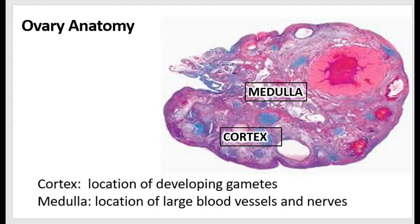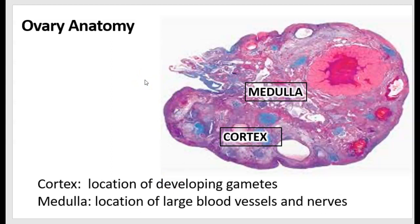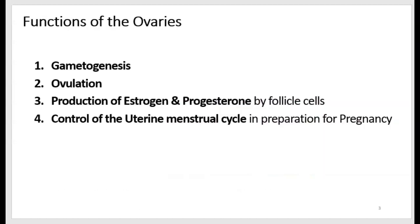The center of the ovary is referred to as the ovarian medulla, and this is the location of large blood vessels and nerves. The outer covering of the ovary is composed of connective tissue called the tunica albuginea, just like in the testicle. The ovary is controlled hormonally, but there's also substantial evidence that the autonomic nervous system contributes to ovarian function.